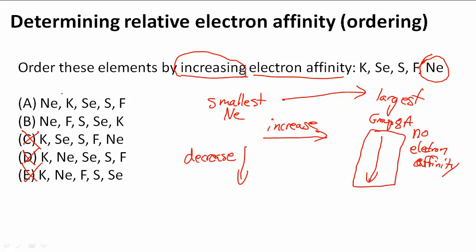So K actually is smaller than Se because when we go from right to left we are decreasing. So K and Se are going to be smaller.